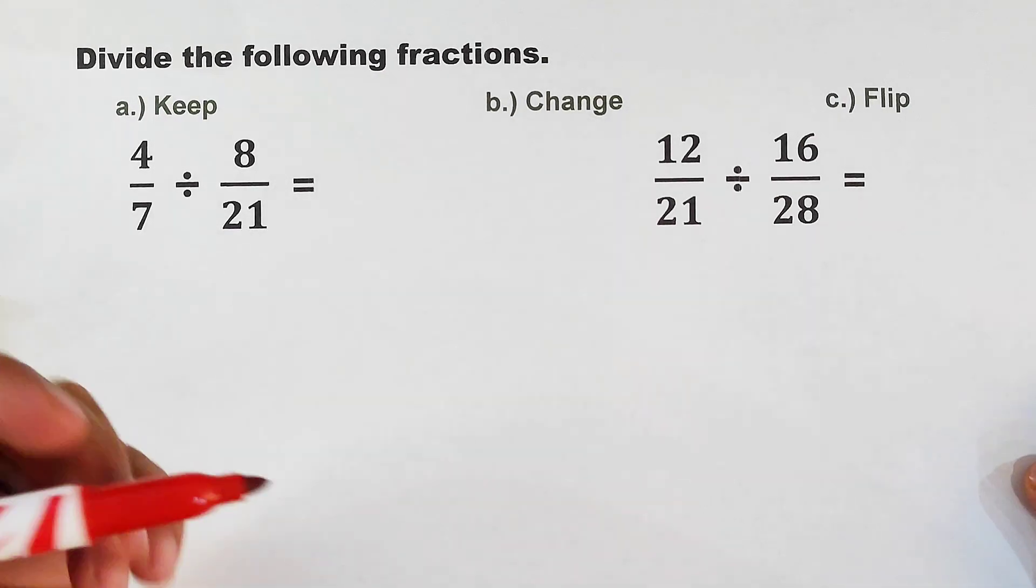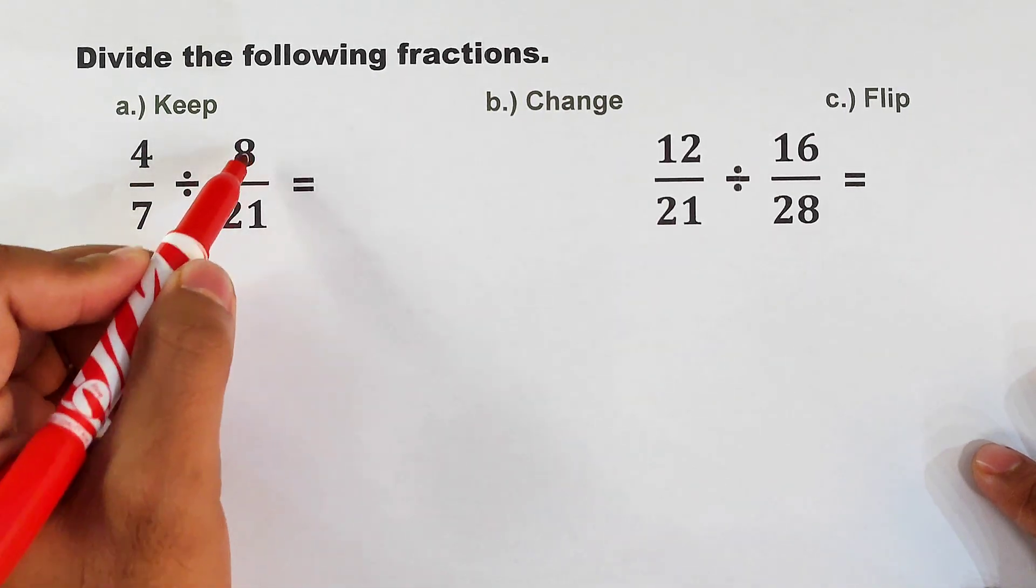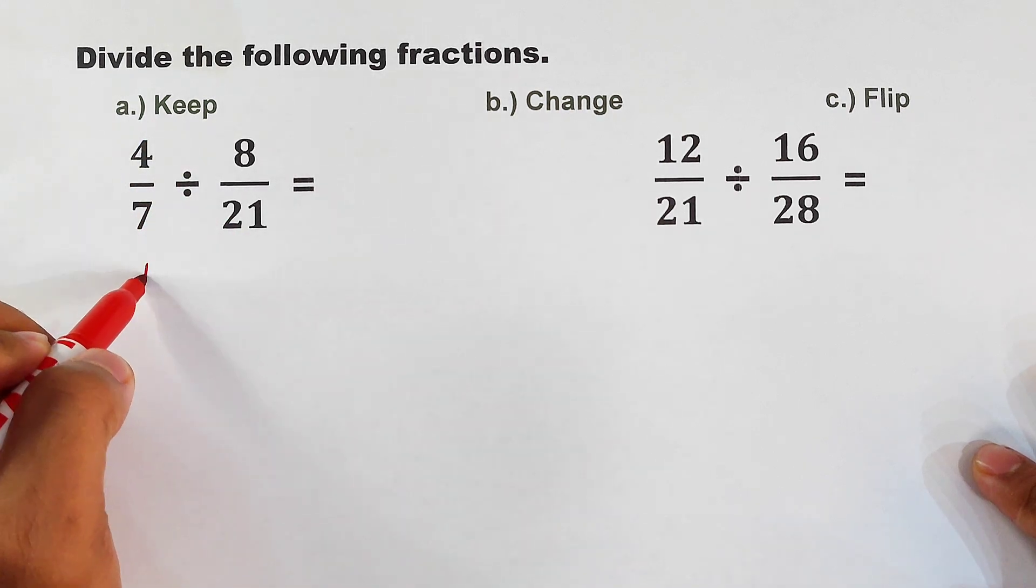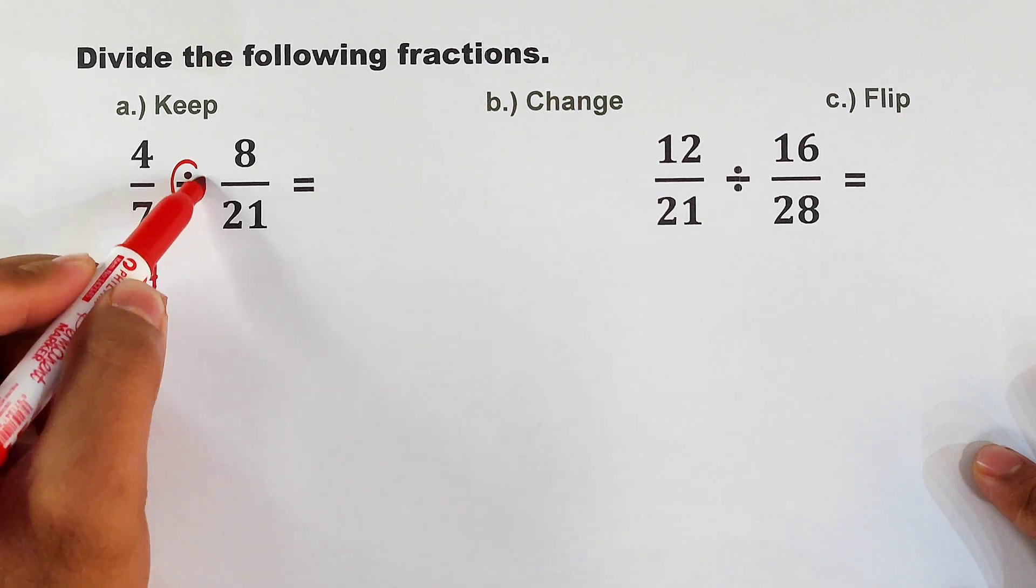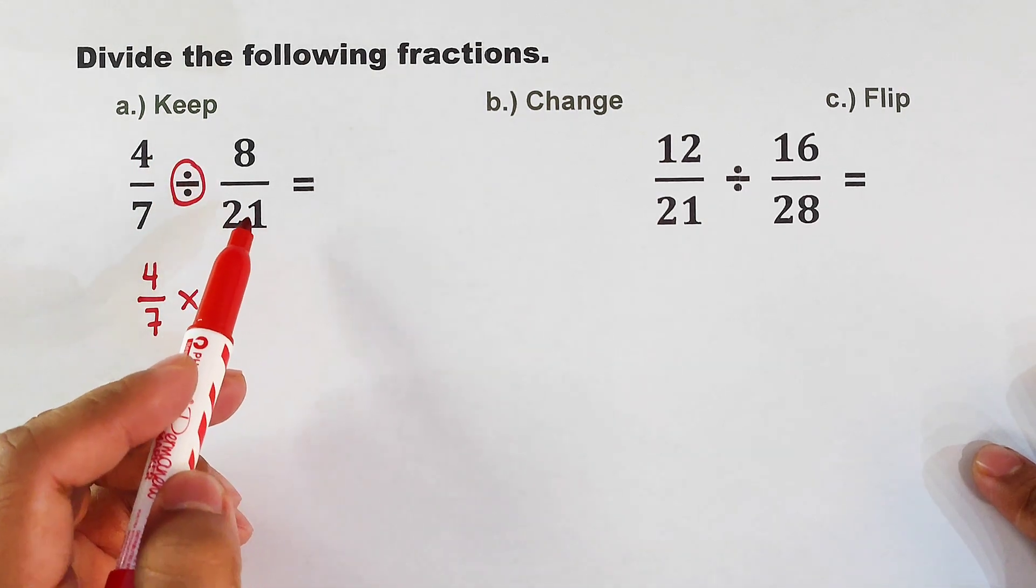Now let's proceed with another example. So what we have here are examples number 3 and examples number 4. We have here 4 over 7 divided by 8 over 21. We will keep the first fraction, that would be 4 over 7. Change the operation: change the operation to multiplication. Flip the second fraction: we have 21 over 8.